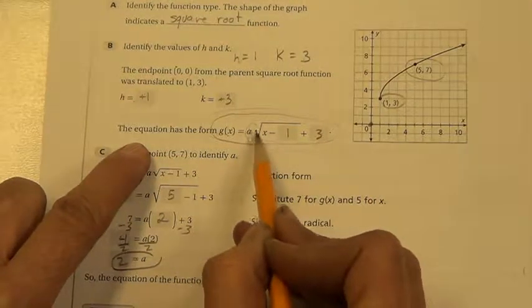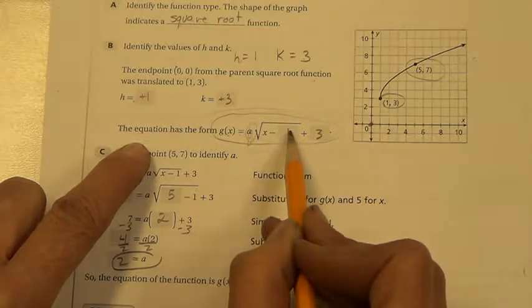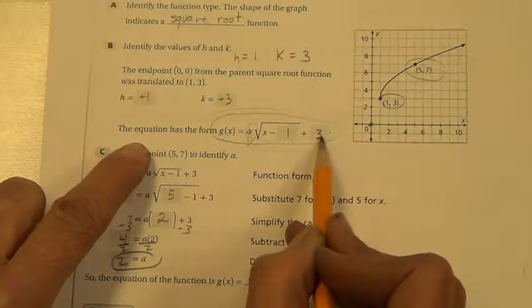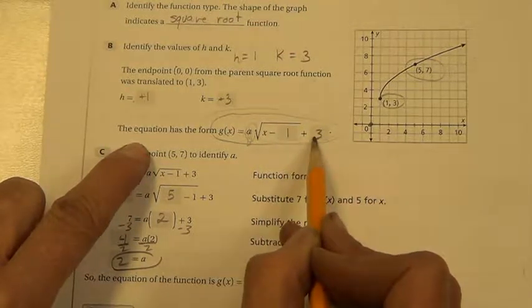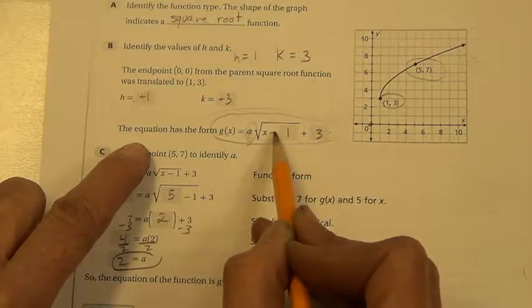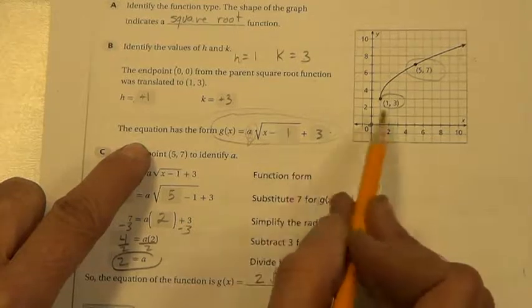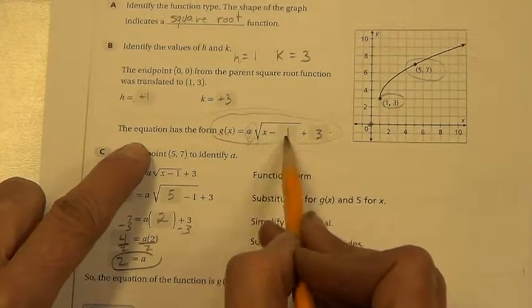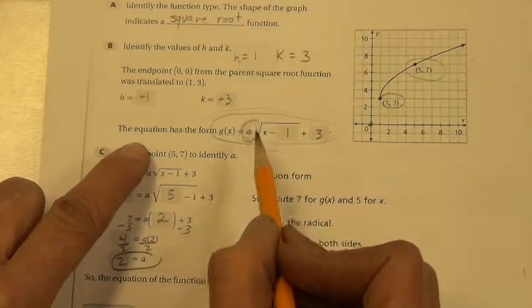Put those in for h and k. The minus was in the formula, so a positive 1 on the graph comes in looking like a negative 1. Now we need to solve for this a. In order to do that, we have to find another point on the problem. This is x and this is y of that point.